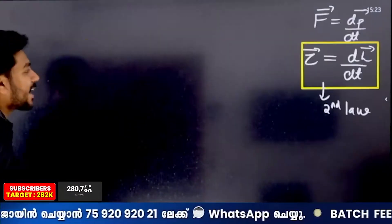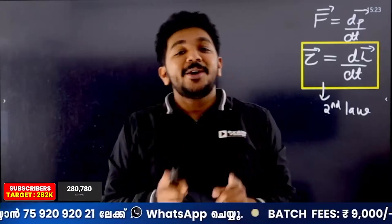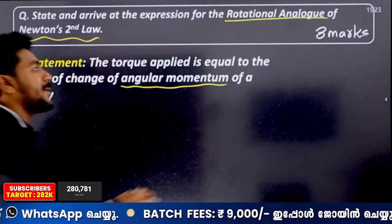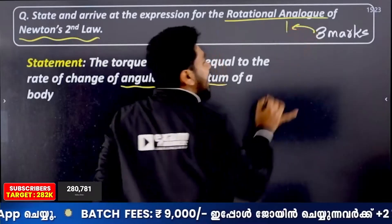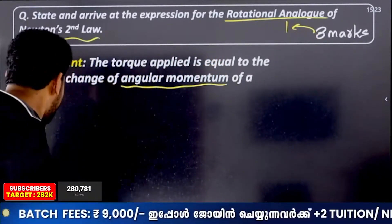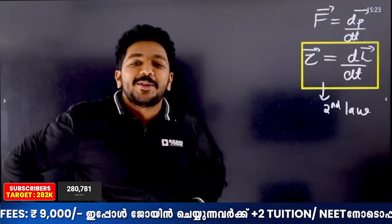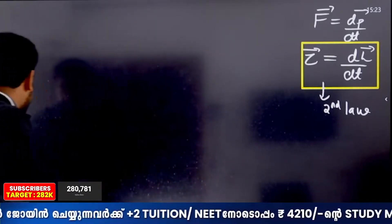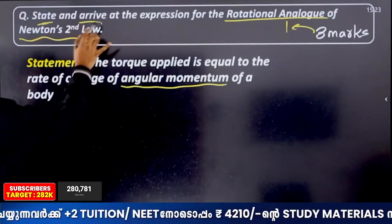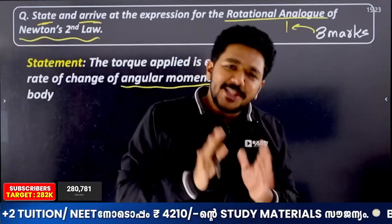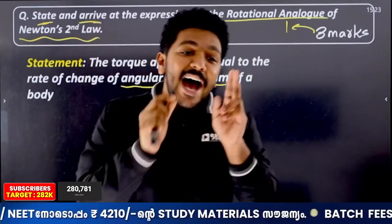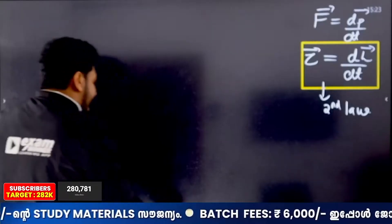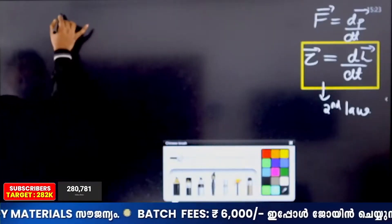Newton's second law statement in rotational motion: the torque applied is equal to the rate of change of angular momentum of a body. The statement is perfect. For each statement, you'll have one mark; if you have two marks for the other part, you'll derive it. State and arrive — you can go to arrive. That's two marks okay.